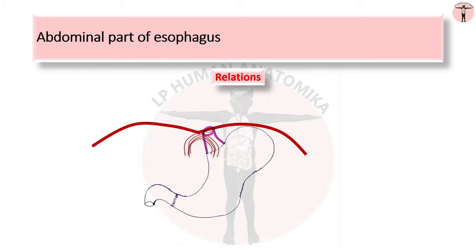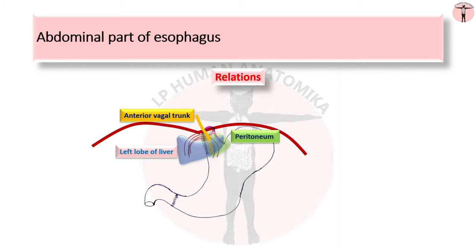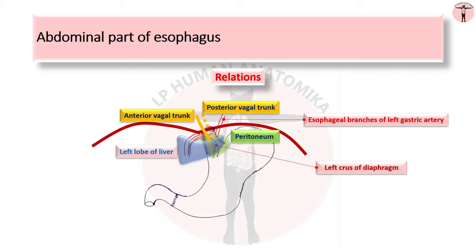The abdominal esophagus is covered by peritoneum only anteriorly and to the left. Anteriorly, it is related to the anterior vagal trunk and the left lobe of liver. Posteriorly, it is related to the posterior vagal trunk and the diaphragm. On the left side, it is related to esophageal branches of the left gastric artery and accompanying veins.